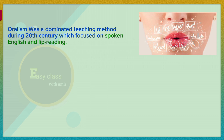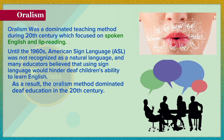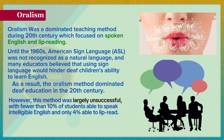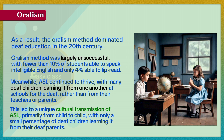Auralism was a dominant teaching method during the 20th century, which focused on spoken English and lip reading. Until the 1960s, ASL was not recognized as a natural language, and many educators believed that using sign language would hinder deaf children's ability to learn. As a result, the auralism method dominated deaf education. However, this method was largely unsuccessful, with fewer than 10% of students able to speak intelligible English and only 4% able to lip read. Meanwhile, ASL continued to thrive, with many deaf children learning it from each other at schools for the deaf rather than from their teachers or parents, leading to a unique cultural transmission of ASL primarily from child to child.